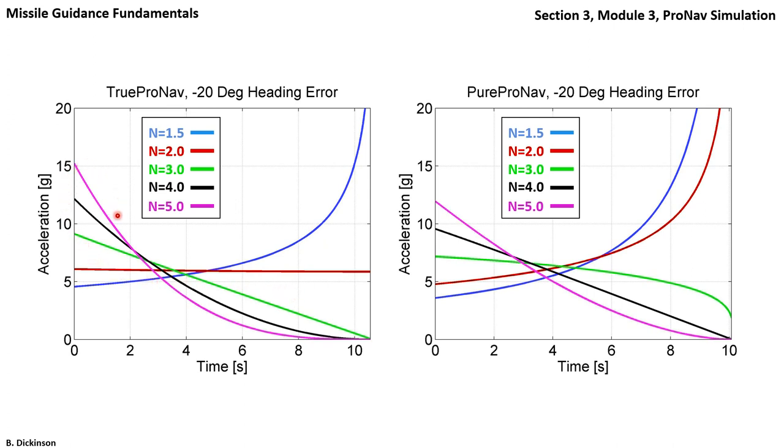For N greater than 2, more effort is being applied early on so that later on, less effort is needed for collision. And acceleration goes to zero, indicating there is a collision triangle.